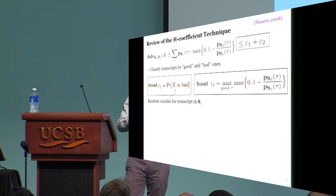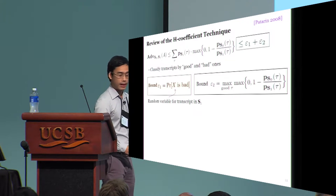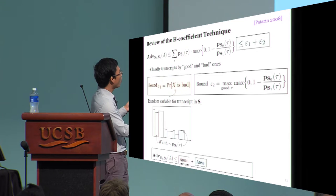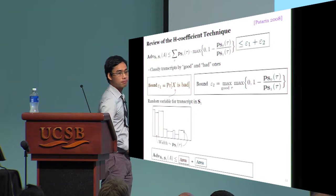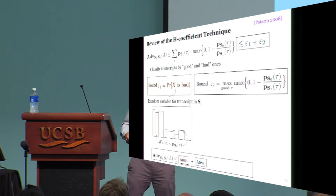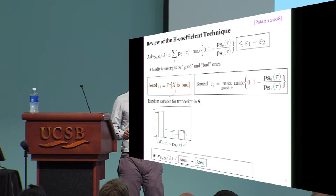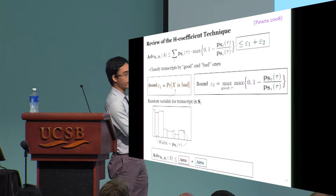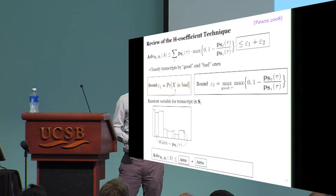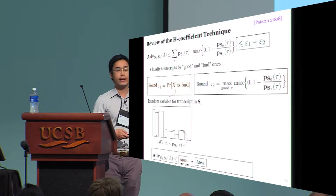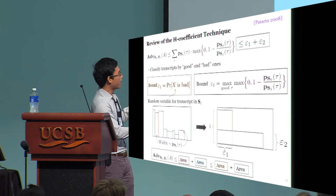To have some intuition why this is true, recall that the statistical distance is the sum of some products. Now if we plot rectangles whose widths are the first term in the product, and the heights are the second term, then intuitively, the statistical distance is just the total area of the plotted rectangles. In this picture, the red areas correspond to the bad transcripts, and the blue areas correspond to the good ones. Given this, the H-coefficient technique tells us that you can upper bound the red area by this orange rectangle, and the blue area by the gray one.